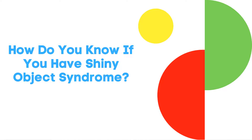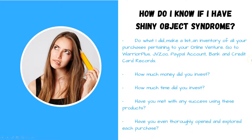So the big question is: how do you know if you have shiny object syndrome? Odds are you probably already do. Basically, do what I just showed you — make a list, make an inventory of all your purchases pertaining to your online venture. Go to Warrior Plus, JVZoo, any other platforms you purchase from. Your PayPal account or bank and credit card records will show you all the purchases you've made over certain periods of time.